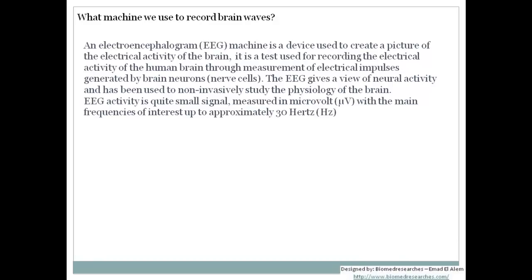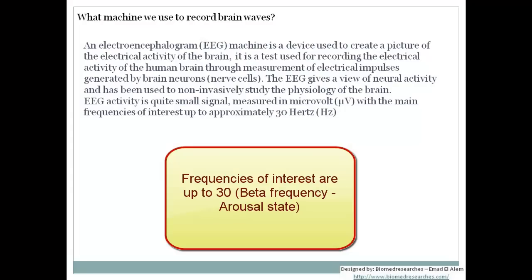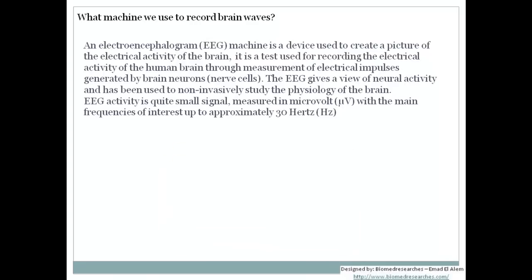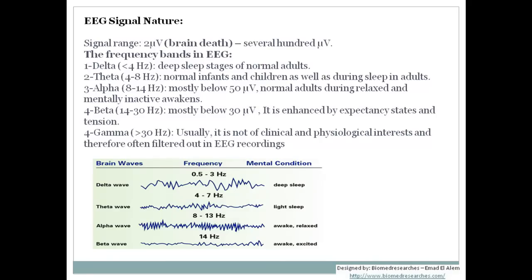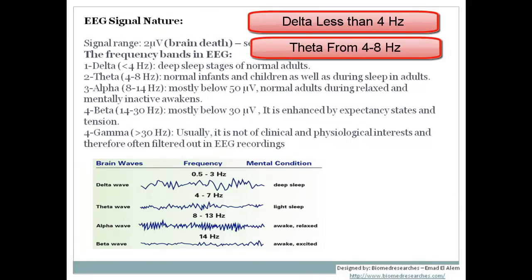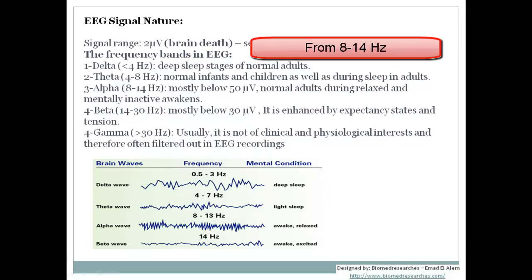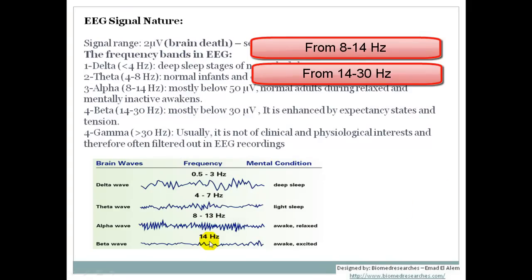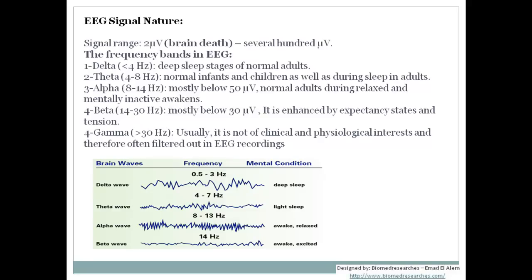The frequencies of interest on an EEG are up to 30 Hz, including up to the beta frequencies which indicate the state of arousal. The main EEG bands are: delta (less than 4 Hz), theta (4–8 Hz), alpha (8–14 Hz), and beta (14–30 Hz). Gamma waves above 30 Hz are not of clinical or physiological interest and are often filtered out. The signal range spans from 2 microvolts, indicating brain death, to several hundreds of microvolts.